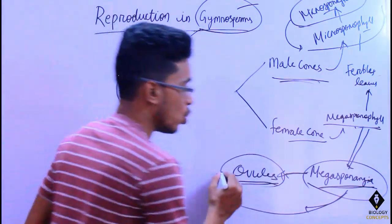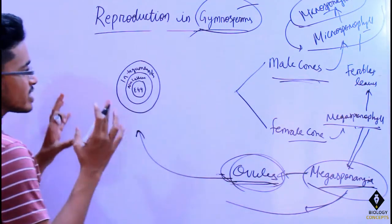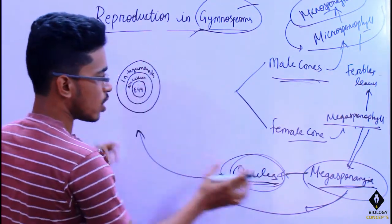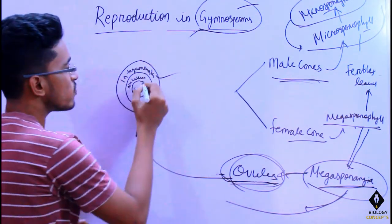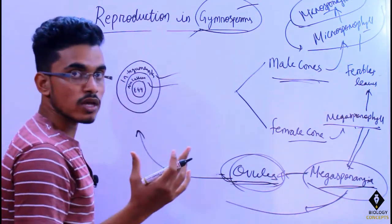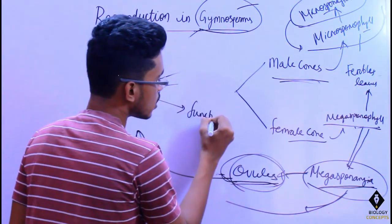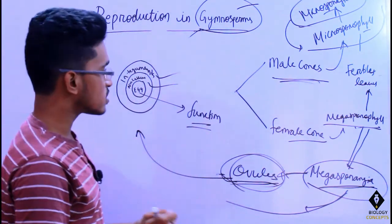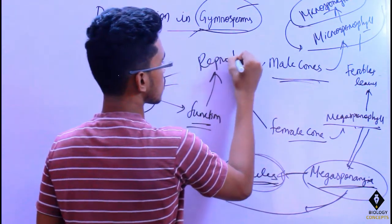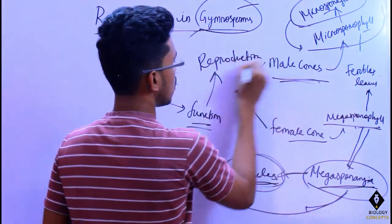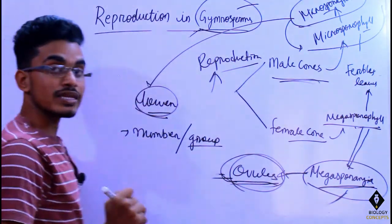If we discuss the structure of ovules: the outer layer of the ovule is called the integuments. Inner to the integuments we have the nucellus. Inner to the nucellus we have a single functional egg, which takes part in reproduction.